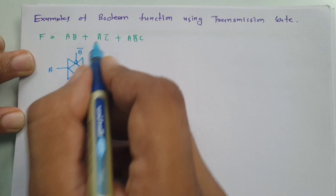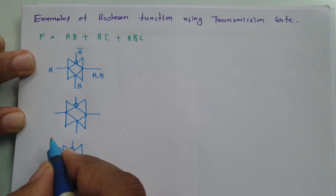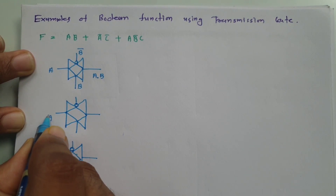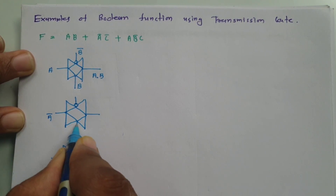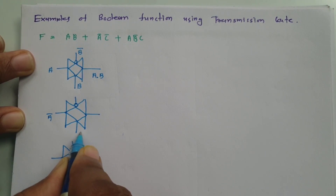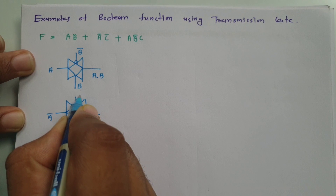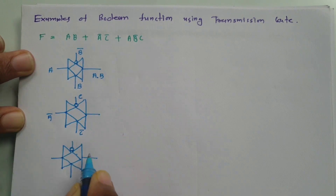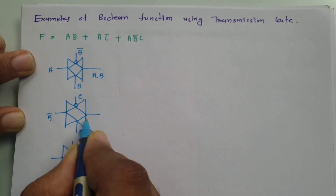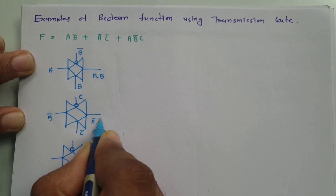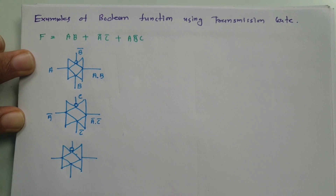For the second product term ā·c̄, my input is ā. With the straight terminal I will be providing c̄, and with the bubble terminal it should be c. So my output will be ā·c̄.